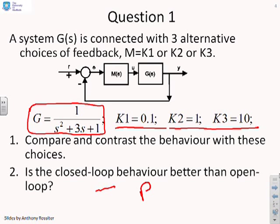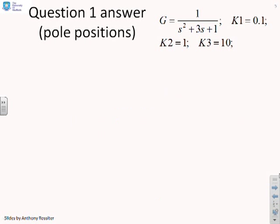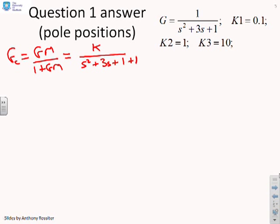Now's the time to pause the video and try this before we move to the solutions. First then, we're going to look at the pole positions. Now before we do that, we need to write down what the closed-loop transfer function is. So GC equals GM over 1 plus GM, which will give you K over s squared plus 3s plus 1 plus K. So there's our closed-loop transfer function.